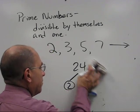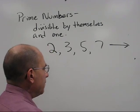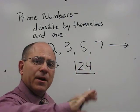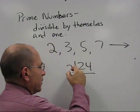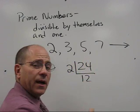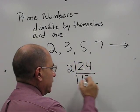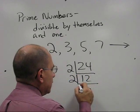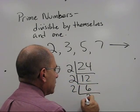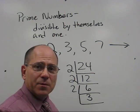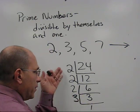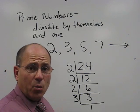But there's another method that works like this. 24, again, you make a division symbol but upside down. And you say 2 into 24 goes 12 times. 2 into 12 goes 6 times. 2 into 6 goes 3 times. And then 3 into 3 goes once. Again you wind up with three 2's and a 3. Either way will work.